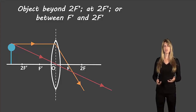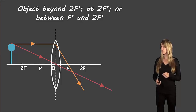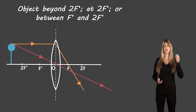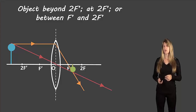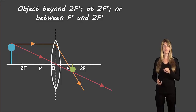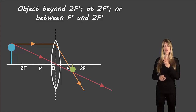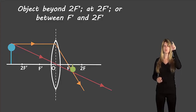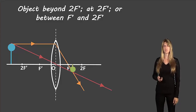Since we started drawing our light rays at the top of the balloon, where the light rays cross — in this picture, between f and 2f — will also be the top of the balloon. Where the light ray started is the top, so where they cross will also be the top. The string of the balloon went straight down to the principal axis, which means the string of the balloon in our image will also go straight to the principal axis — it's upside down this time, but it moves towards the principal axis. This is what our final image would look like.